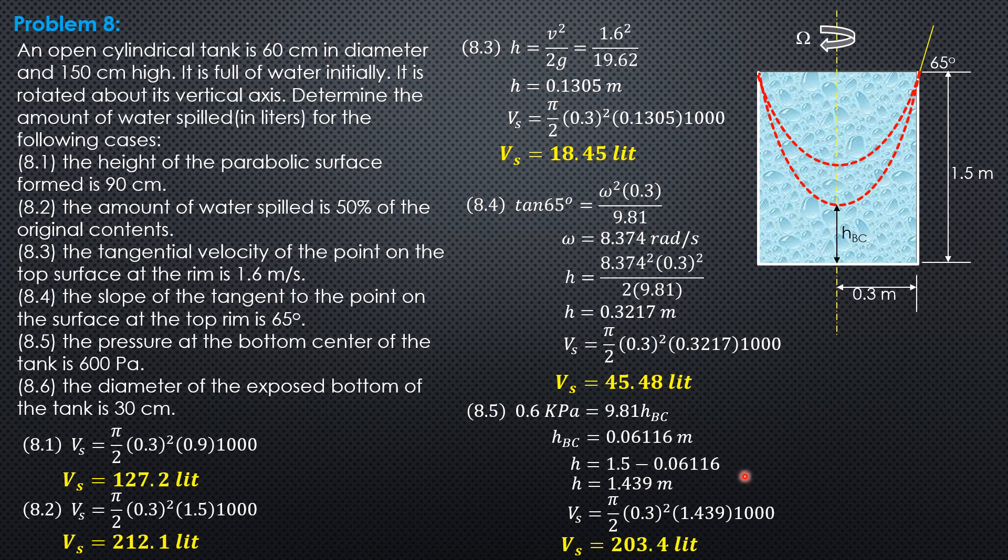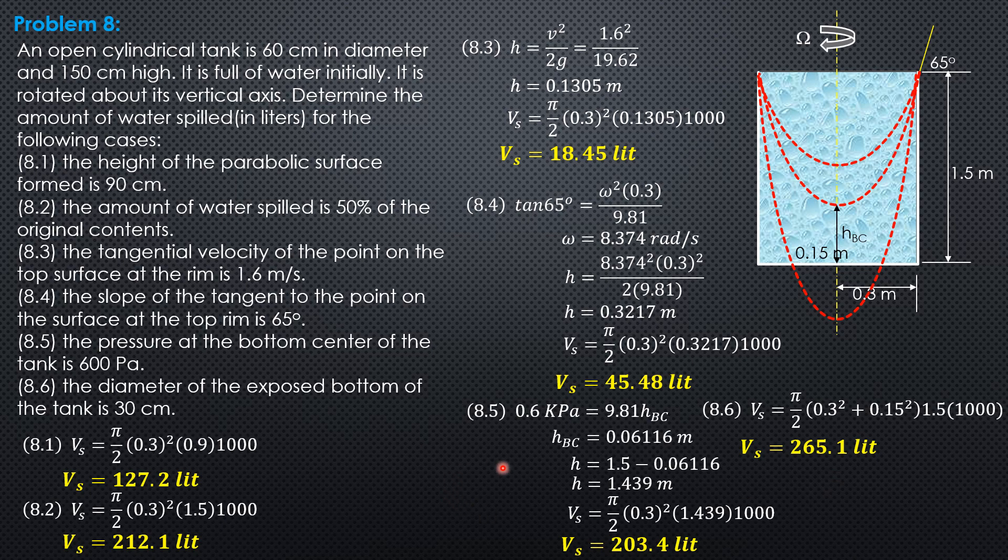Then finally, the diameter of the exposed bottom of the tank is 30 cm or the radius of the exposed bottom is 0.15 meter. So that means the vortex exceeds beyond the bottom center. And this is 0.15. And this is filled with air. So this is the volume that is spilled. And we have a direct formula for that for paraboloid revolution with two pieces. So volume spilled is pi over 2 times quantity 0.3 squared plus 0.15 squared times 1.5 times 1,000. So volume spilled is equal to 265.1 liters. So that's all for this video and for this example.